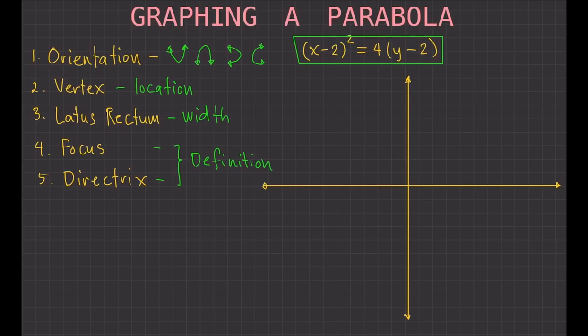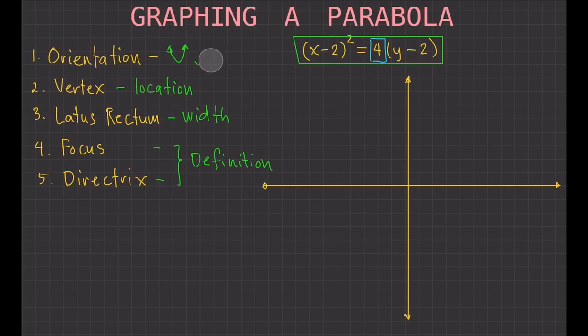The parabola opens up or down, so we can eliminate the left and right possibilities. To narrow it down to one, look at the number outside the parenthesis on the right-hand side of the equation. If that number is positive, the parabola opens upwards; if negative, it opens downwards. The number here is positive, so the parabola opens upwards.